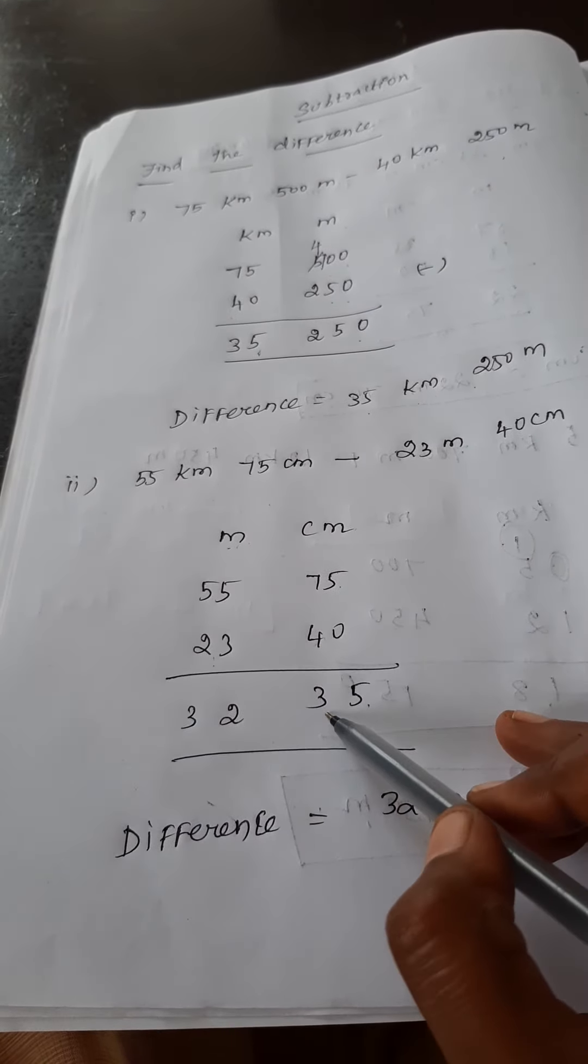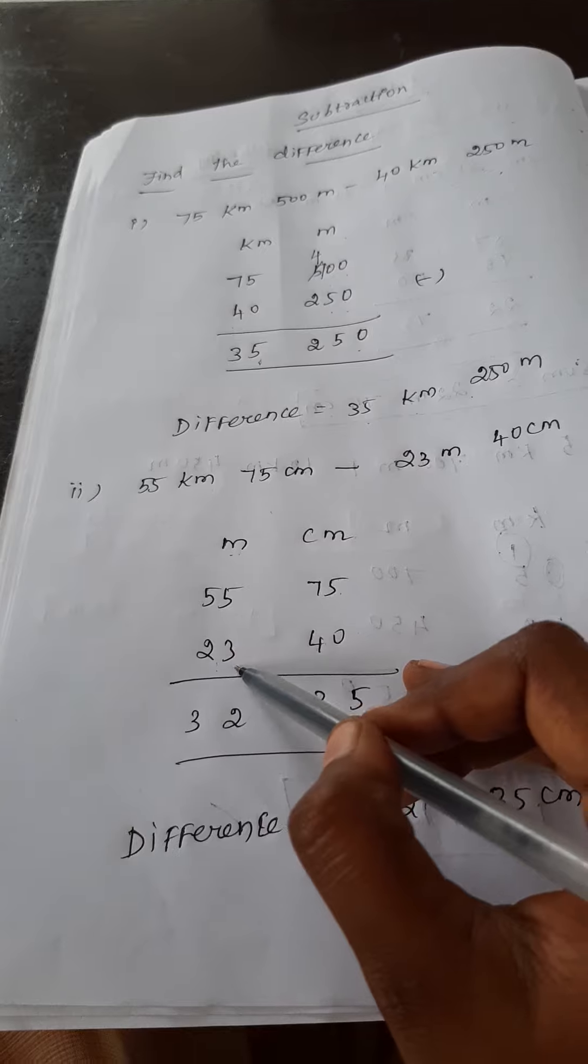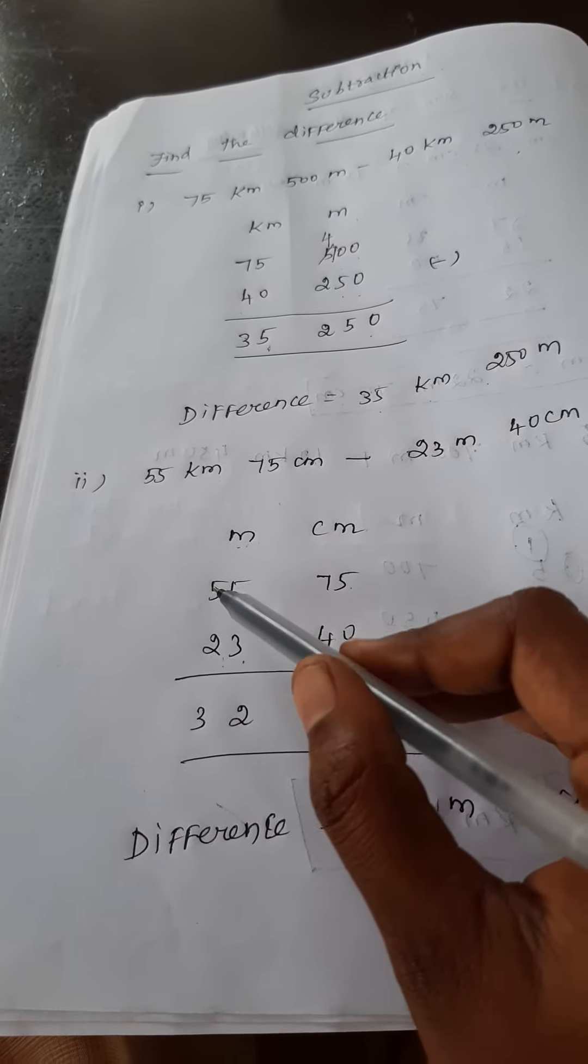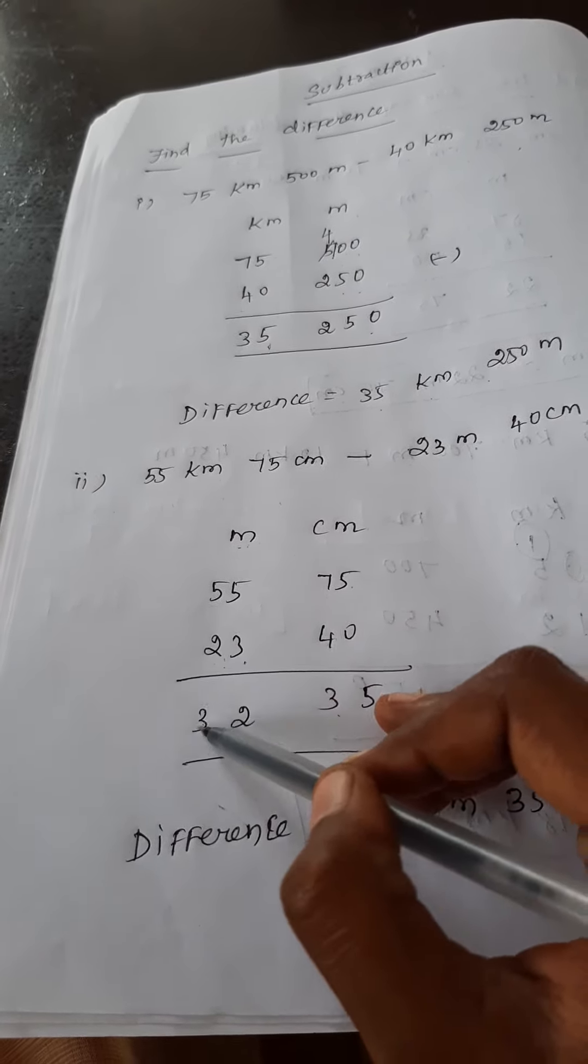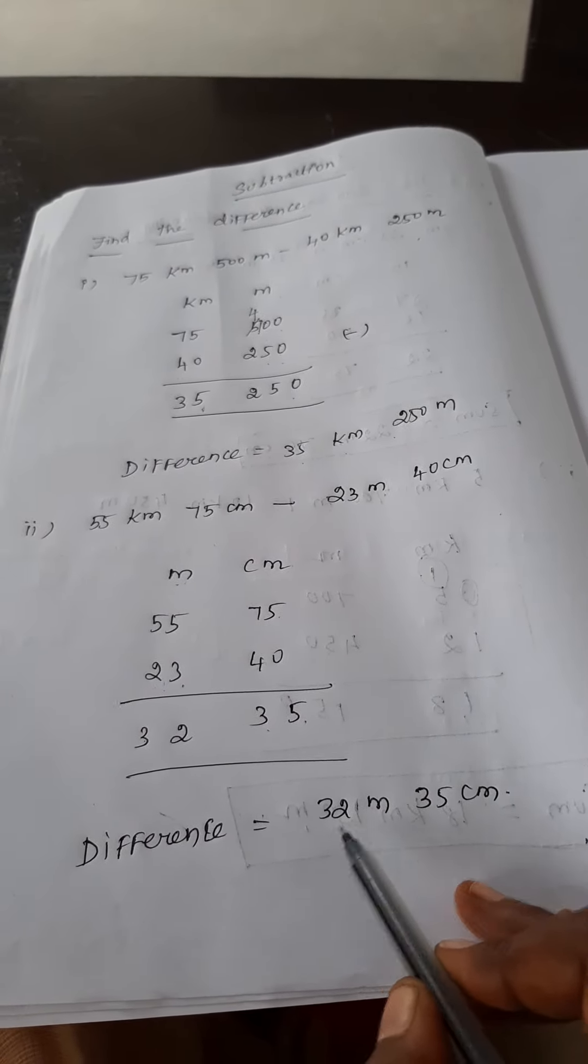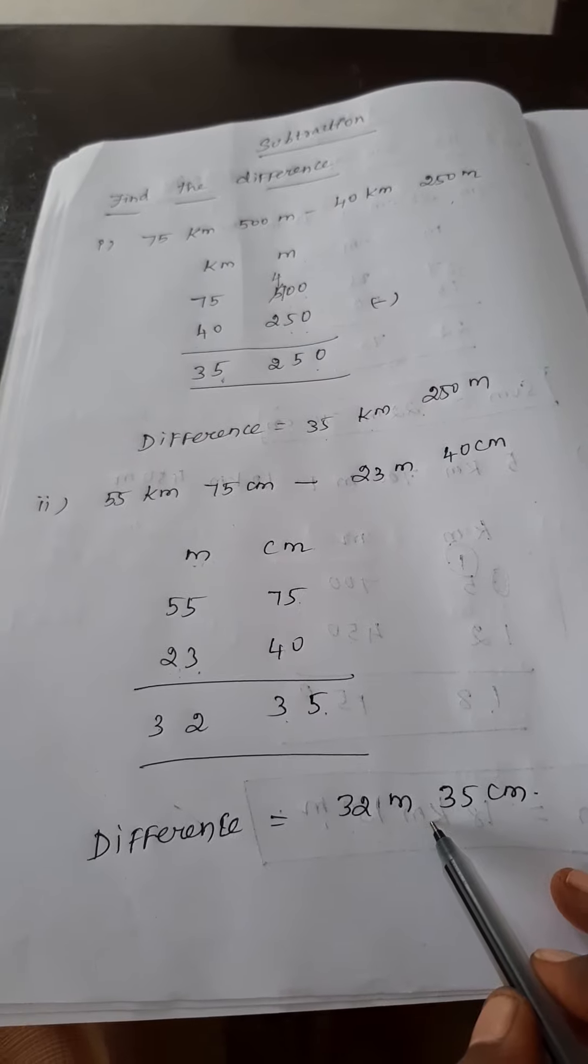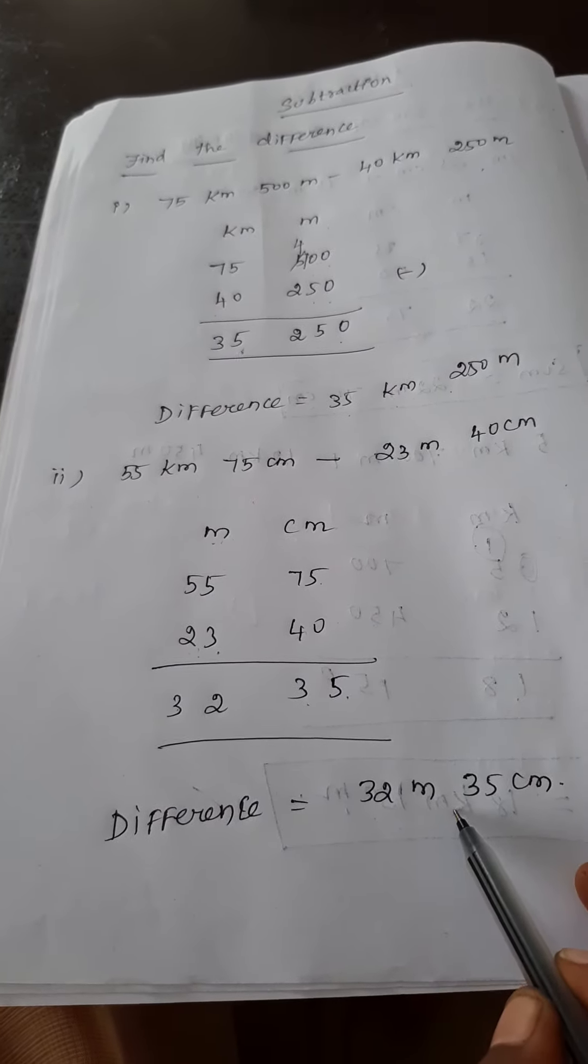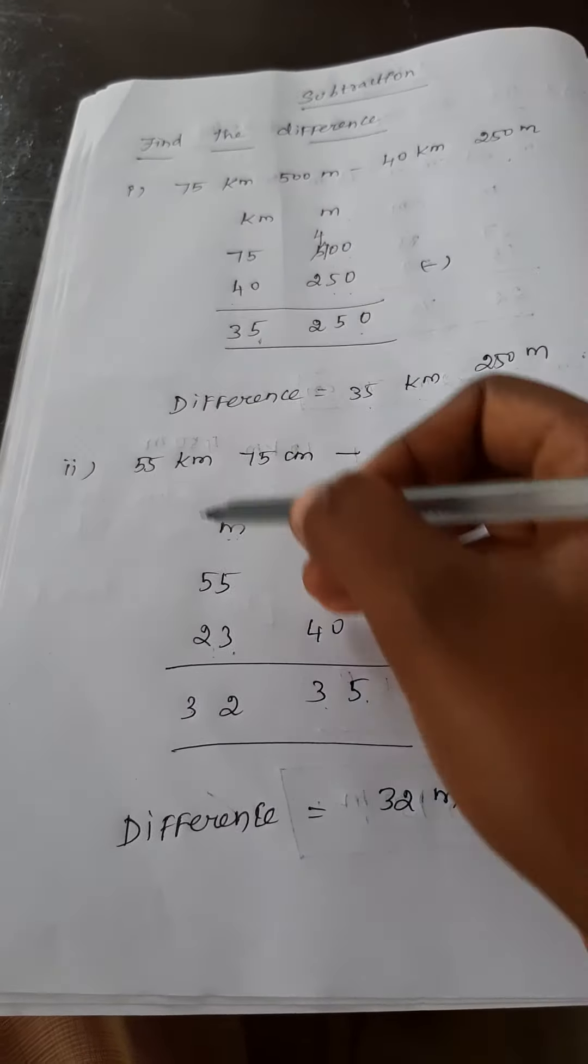Now I subtract the number. Five minus zero, what is the value? Five. Seven minus four? Three. Five minus three? Two. Five minus two? Three. So what is the difference value from there? The difference is 32 meter 35 centimeter.